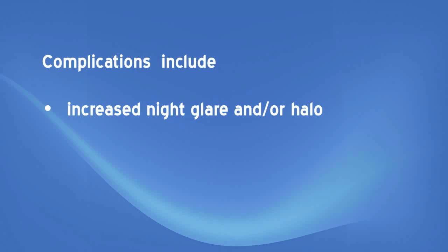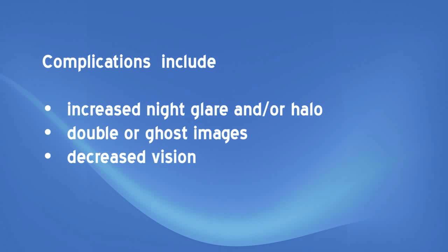Specific complications associated with multifocal IOLs include increased night glare or halos, double or ghost images, and decreased vision due to a lens that is improperly centered. While a multifocal IOL can reduce dependency on glasses, it might result in less sharp vision, which may become worse in dim light or fog. A multifocal IOL is likely to cause some visual side effects such as rings or circles around lights at night, and driving at night may be affected. It's possible that not all near and intermediate focusing ability will be restored after surgery, requiring the use of glasses.